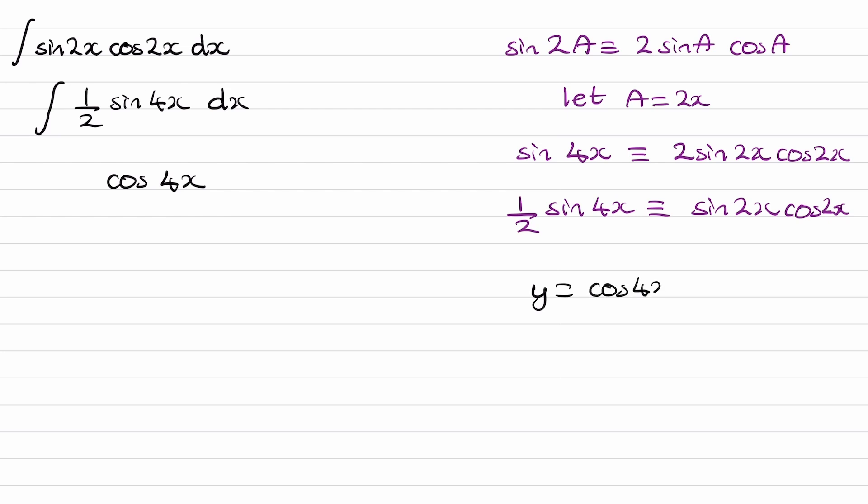What does cos 4x differentiate to as it is? This will be minus 4 sine 4x. We want a half to come out. So if we were to multiply this by minus an eighth, that will carry through with the differential. Minus an eighth times minus 4 will give you a half, which is what we want.